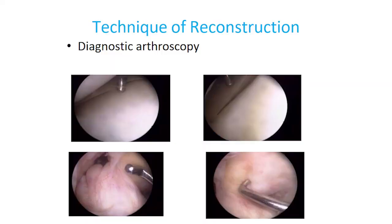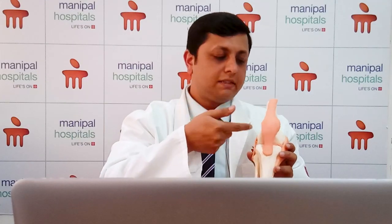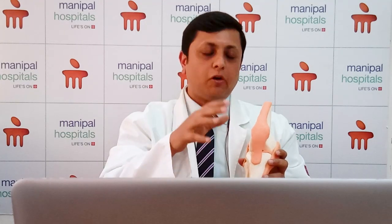Arthroscopy is a keyhole surgery where we do not open the joint completely. There are only about two small incisions of about one centimeter made on either side of the patellar tendon. A telescope called the arthroscope is inserted into the knee joint as the viewing instrument, and we can visualize the inside of the knee on a monitor.